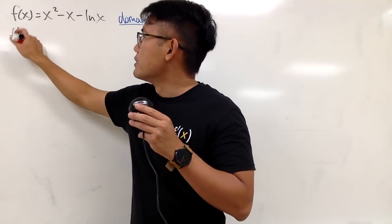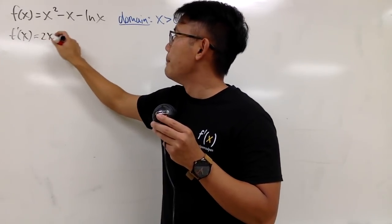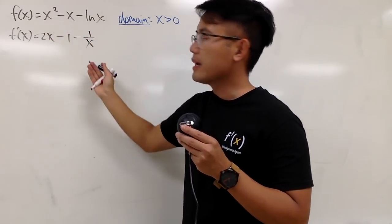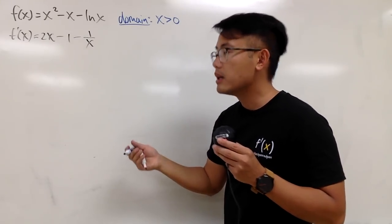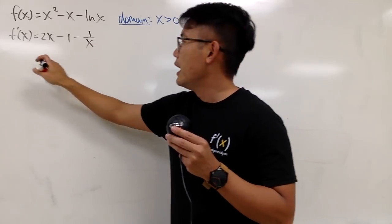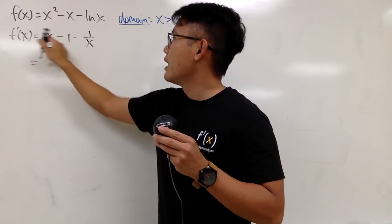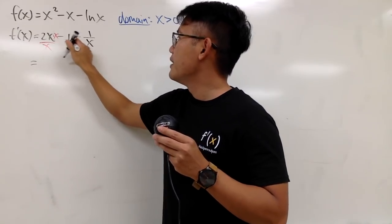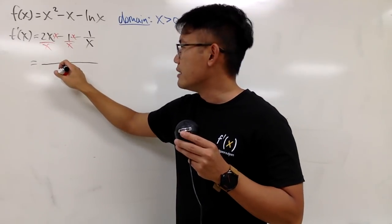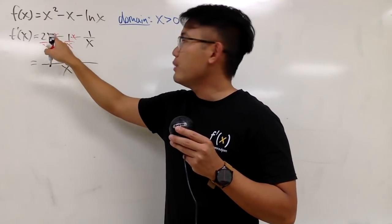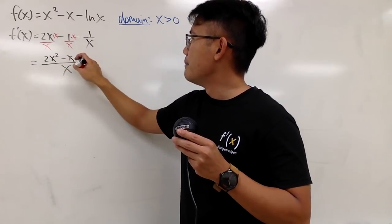To find increasing and decreasing, we need the first derivative. We get f'(x) = 2x minus 1 minus 1 over x. We want to find the critical numbers, so let's combine this first. Multiplying through by x gives us x on the denominator, and then 2x squared minus x minus 1 on top.